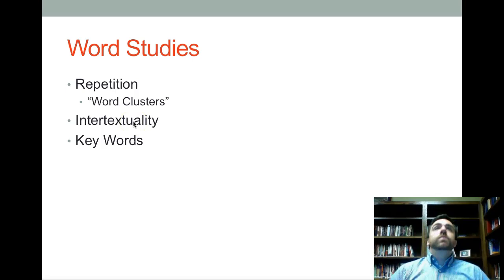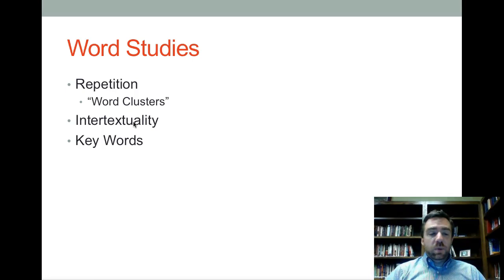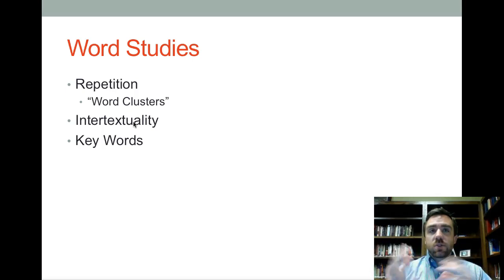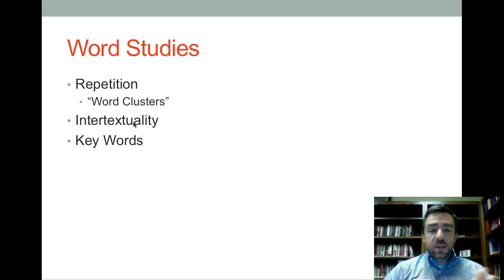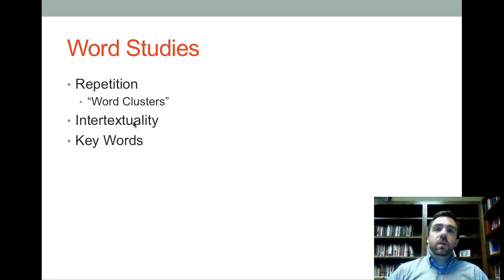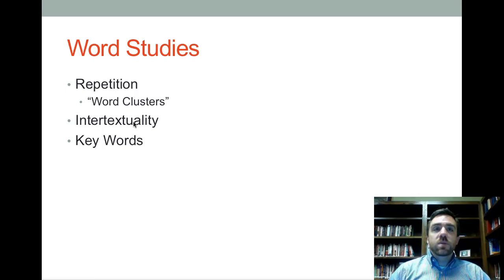Secondly, intertextuality. A biblical author can repeat themselves within a book — intra-textuality — or quote another book: inter-textuality. Intra-textuality is the repetition of words within a book; inter-textuality is the repetition of words between books. Both help us to discern themes. If a biblical author is quoting himself or another book over and over, that links it to particular content elsewhere. And key words — things like 'propitiation' in Romans or 'judgment' in Revelation — also help us understand themes.